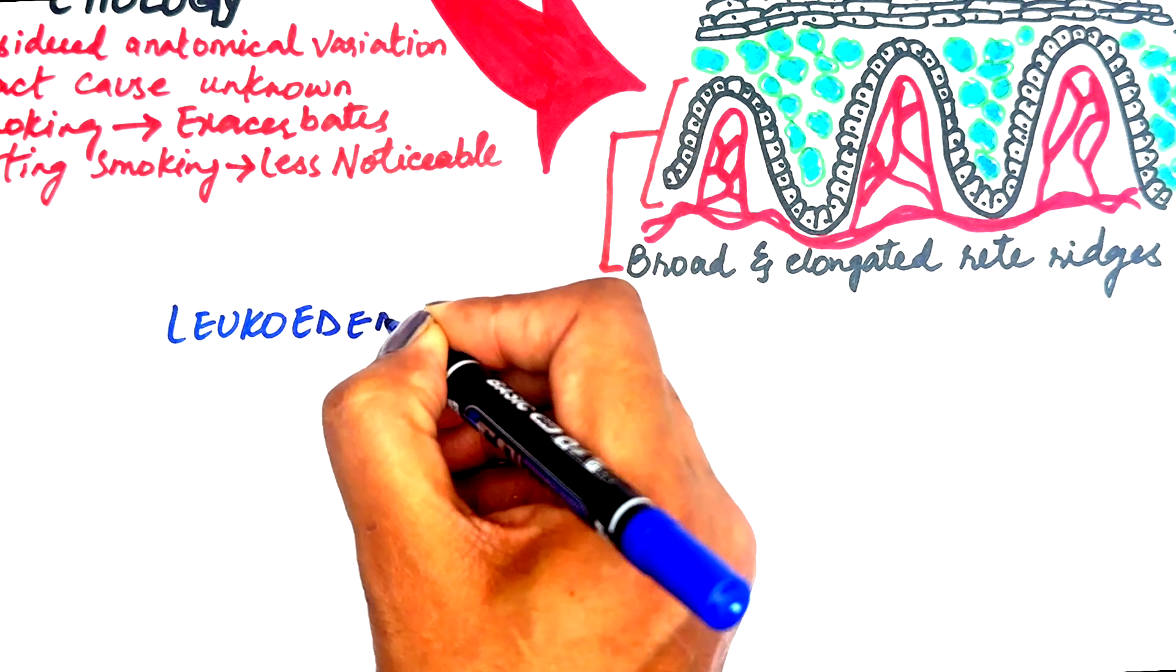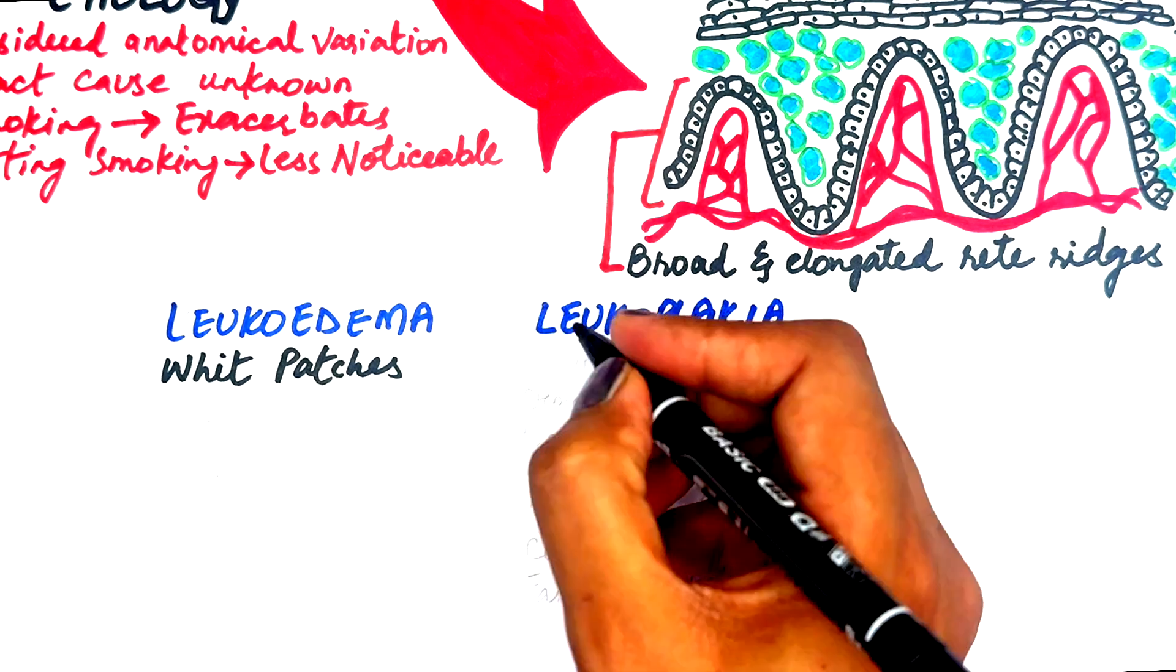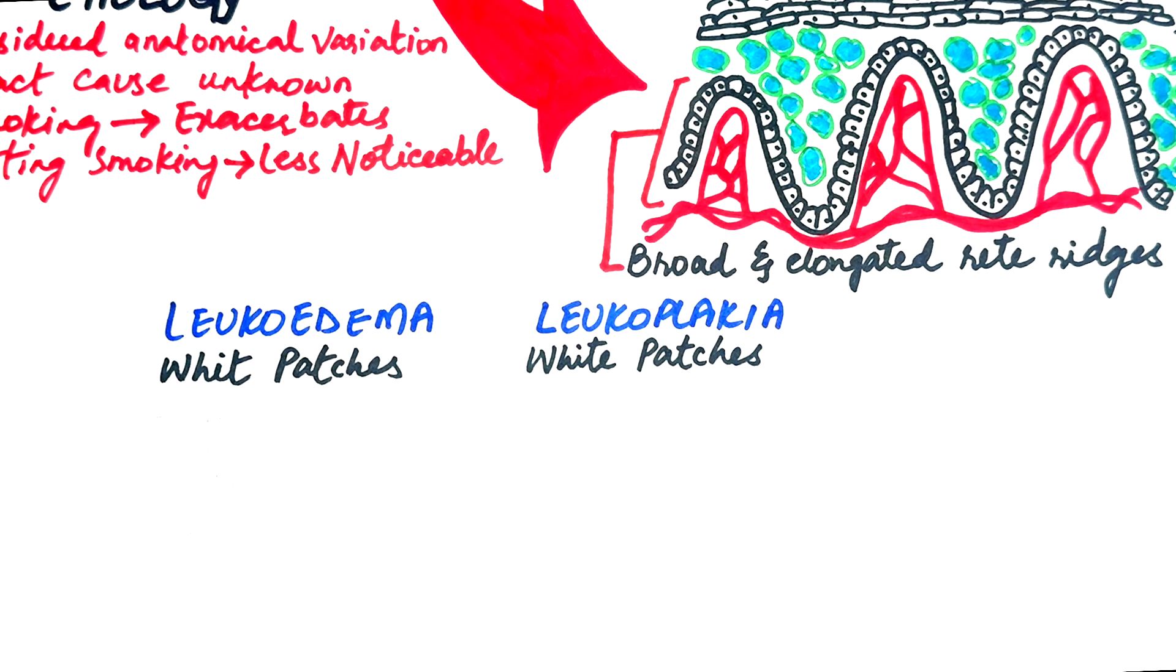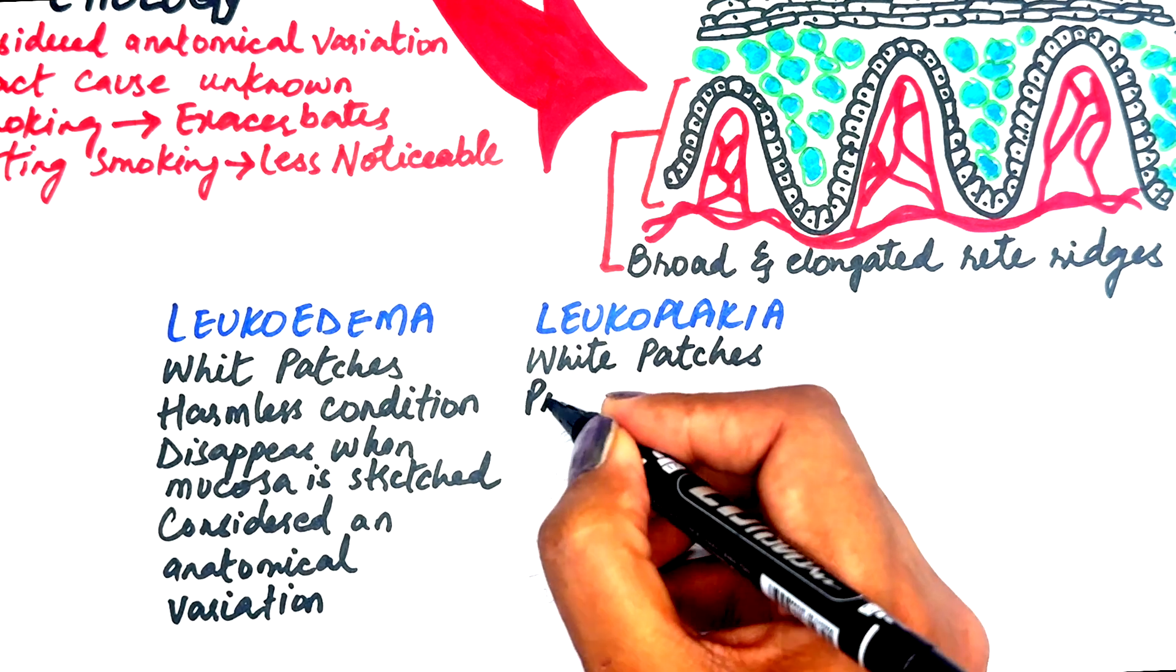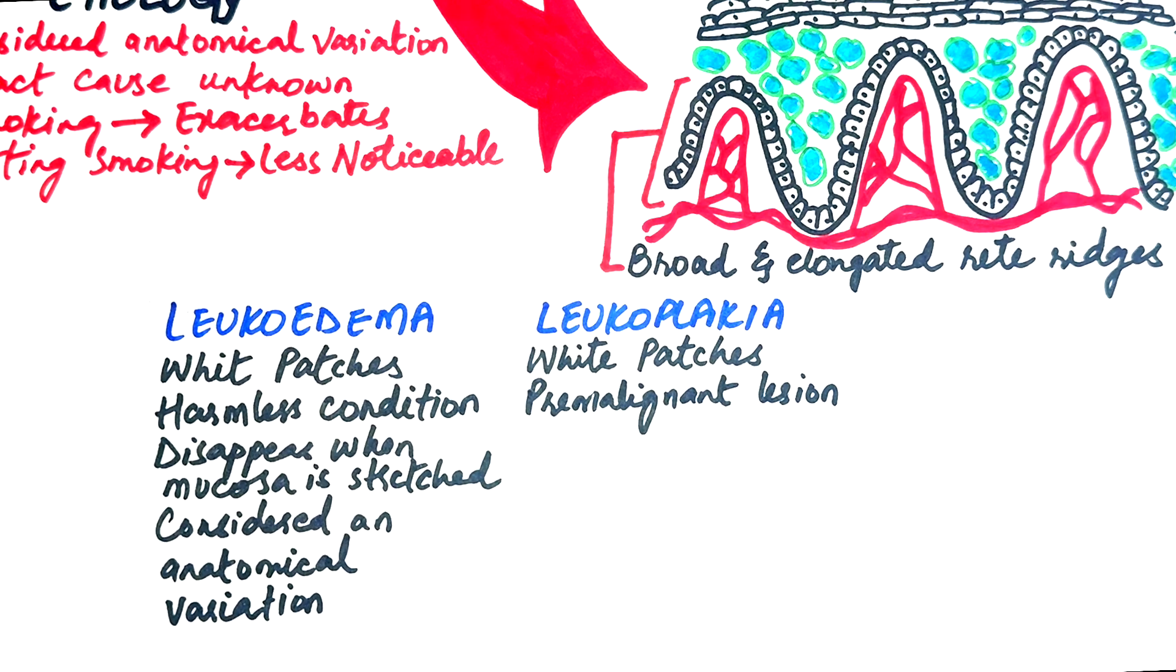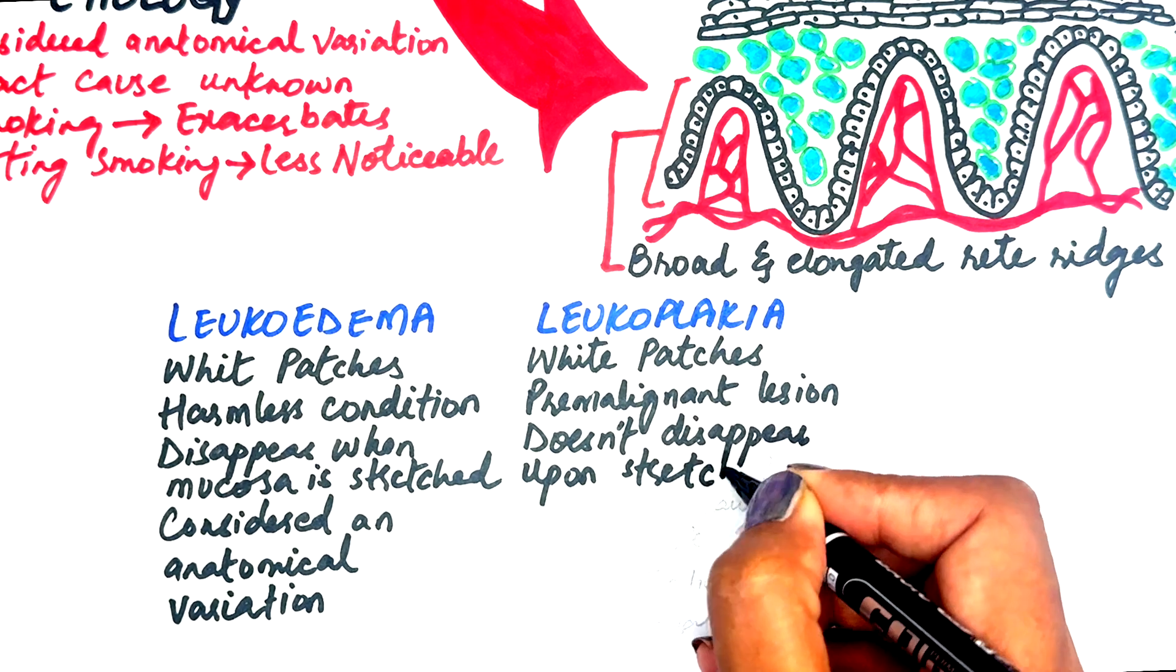Although both leucoedema and leukoplakia present as white patches in the mouth, they have distinct features. Leucoedema is a harmless condition where lesions disappear when the mucosa is stretched. Leukoplakia, on the other hand, is a premalignant lesion that appears as white patches and cannot be scraped off or disappear upon stretching.